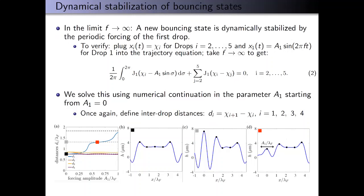To verify this, we plugged the steady state ansatz into the trajectory equation for drops two through five, then took the limit as F approaches infinity, which left us with this system of equations. We solved this using numerical continuation in the parameter A1, the forcing amplitude imposed on drop one.